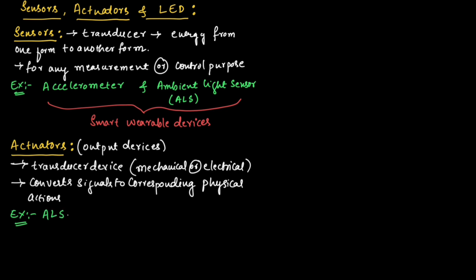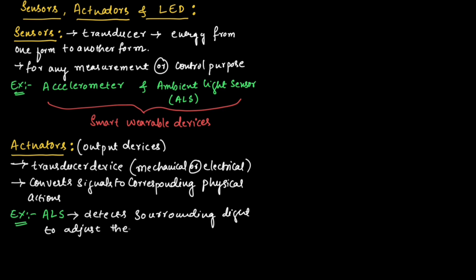An example of an actuator application is the ambient light sensor, which detects surrounding light and uses the actuator circuit to adjust the brightness of the screen in small devices.